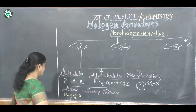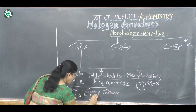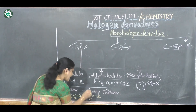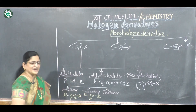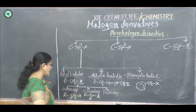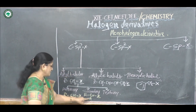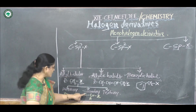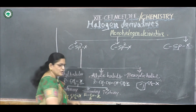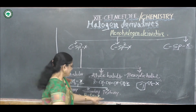In secondary alkyl halides, represented as RCRHX, the halogen atom is bonded to a secondary carbon atom, which is bonded to two other carbon atoms — two alkyl groups. Hence it is called a secondary alkyl halide.